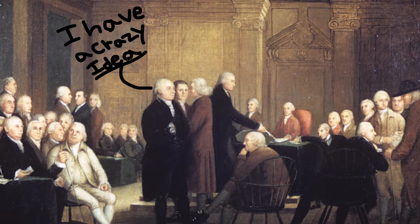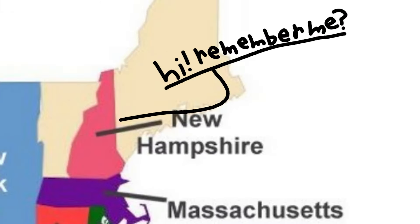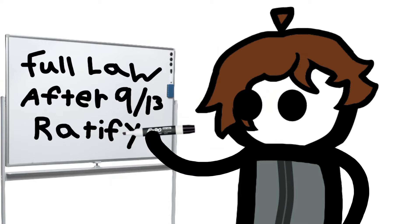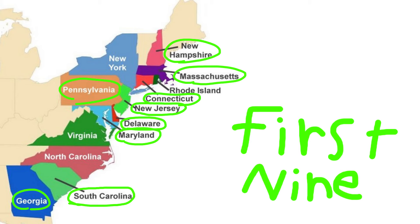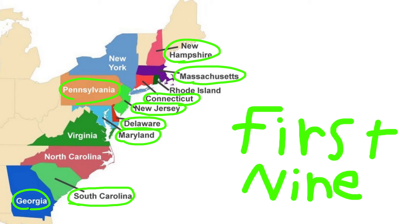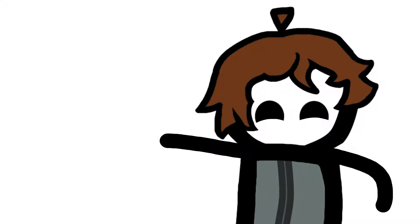Article 7: Ratification. The Constitution was a mere thought in the minds of the Continental Congress and wasn't fully enacted until New Hampshire became the ninth state to ratify it. The Constitution finally became full law for all thirteen colonies when nine of them ratified it as the supreme law.